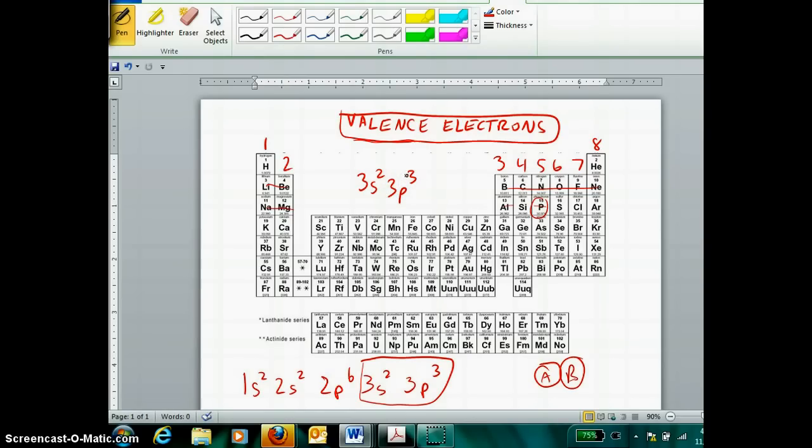And there's a quick and easy way to get a valence configuration without having to tediously work through the entire electron configuration. Instead, to get the valence configuration, we really only have to know two things. We have to know what period the atom's in, 1, 2, 3, 4, 5, 6, or 7, and we have to know what main group the atom's in.